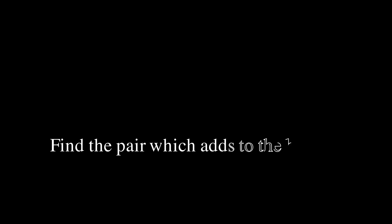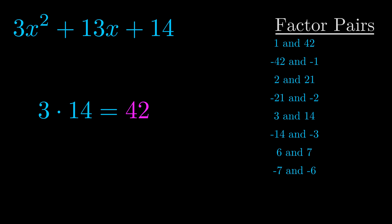The b value is the coefficient on the x term. That's the middle term, the one that we haven't done anything with yet. And really this is the only factor pair that we need.